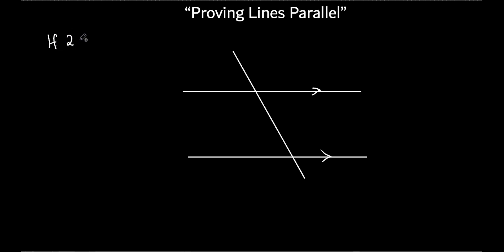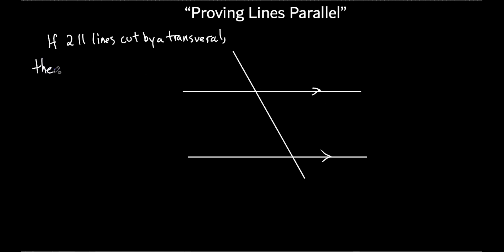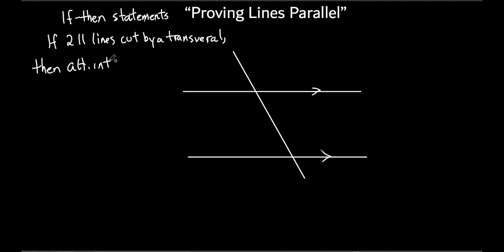It started off saying: if you have two parallel lines cut by a transversal - what I'm writing here is important because of what we're going to do next. This is called an if-then statement. You're going to see these all throughout geometry. If this is true, then this other stuff's got to be true. So if two parallel lines are cut by a transversal, then we've got a bunch of things we learned yesterday. You can fill in the blanks - then the alternate interior angles are equal.